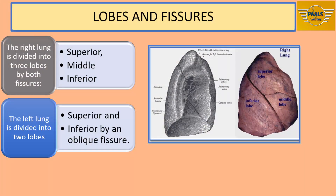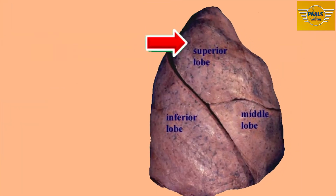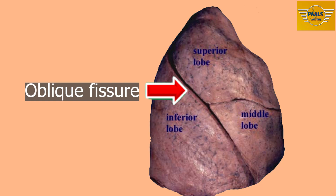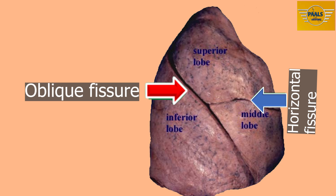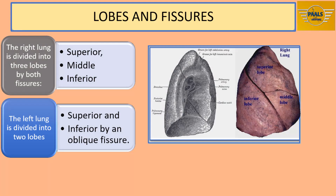The lungs are separated into lobes by clefts called fissures. The right lung has two fissures while the left has only one. The fissures are: one, an oblique fissure seen in both right and left lungs, and two, a horizontal fissure seen only in the right lung. The right lung is divided into superior, middle, and inferior lobes by both fissures, while the left lung is divided into superior and inferior lobes by only the oblique fissure.